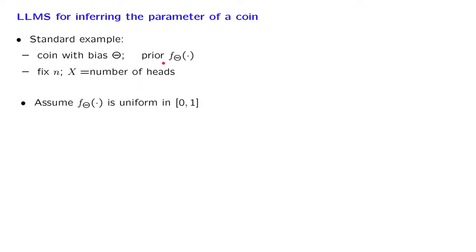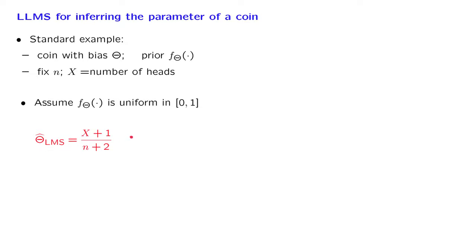To make things more concrete, we're going to assume a prior distribution on theta that is uniform on the unit interval. This is a problem we have considered before. We have calculated the expected value of theta given x, and we found that the expected value takes a particular form. Notice that this is a linear function of x. And if the least mean squares estimator is a linear function of x, then we're guaranteed, since this is the best, that this is also the best within the class of linear estimators.